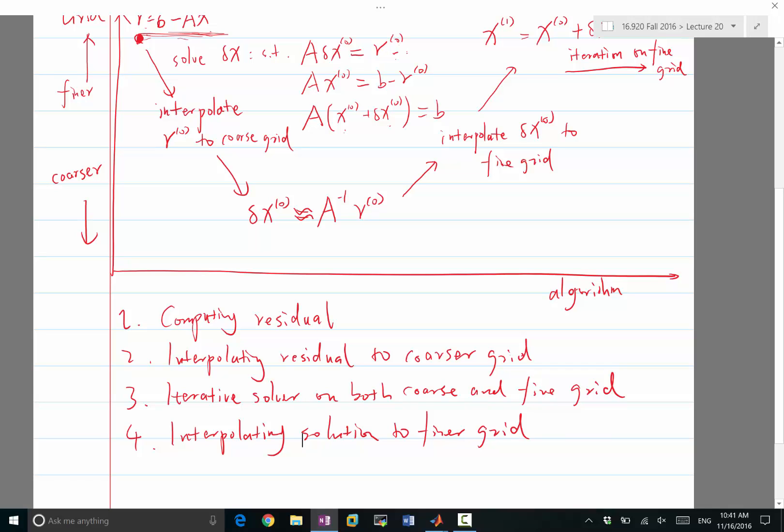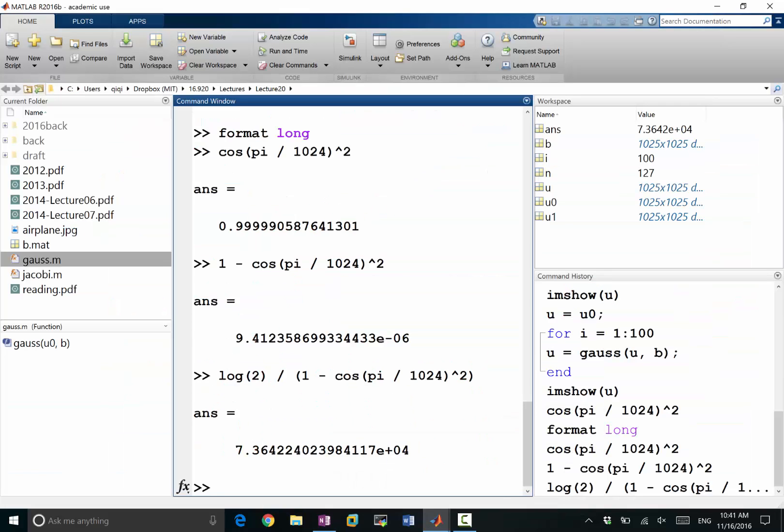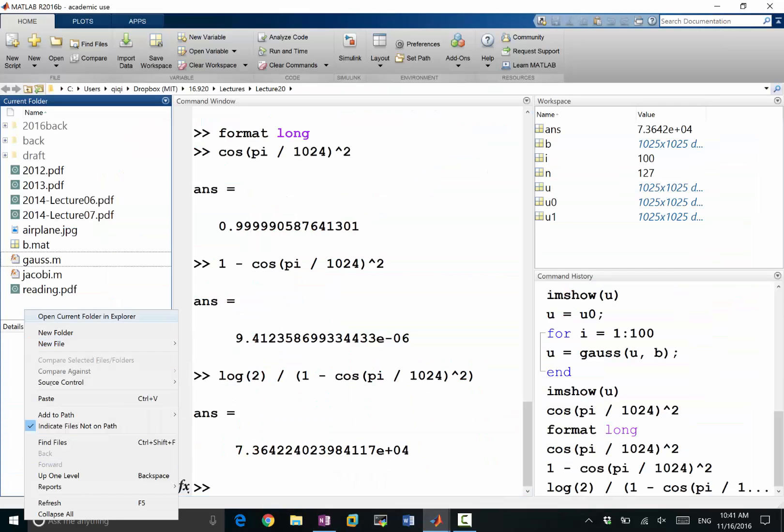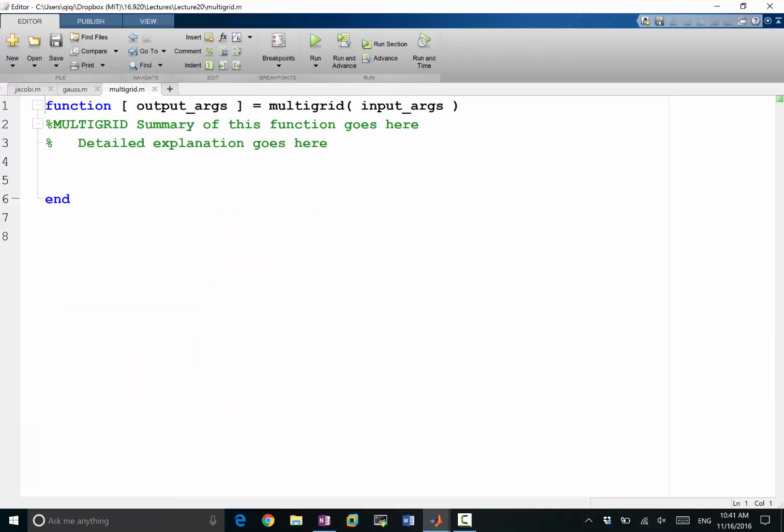Okay, so let's show that back in our MATLAB script. Here let's make a new function called multigrid. We are trying to make it the same way as we coded up the Jacobi and Gauss-Seidel iterations.